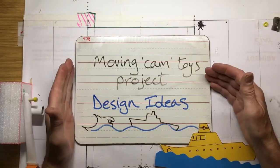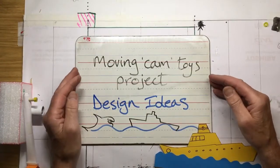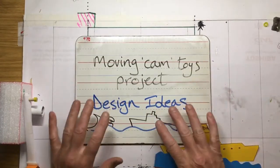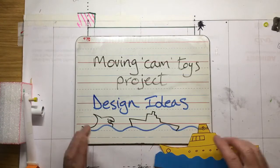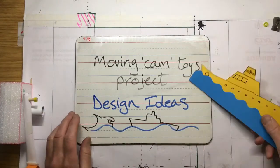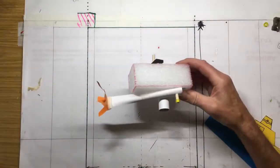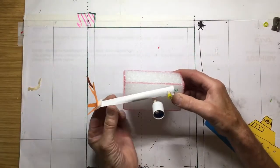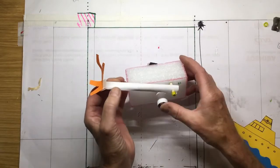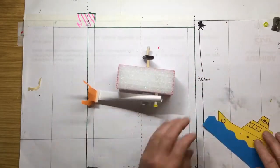In the previous video we made the basic moving cam mechanism, and now we're going to look at some ideas for motion. When I think about cams, because the motion is a gentle up and down motion, it makes me think about the sea.